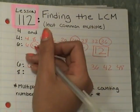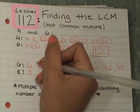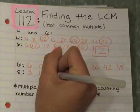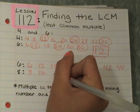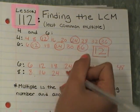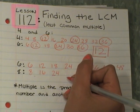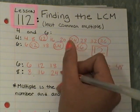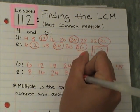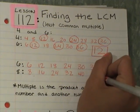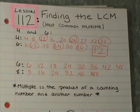8 times 1 is 8, 8 times 2 is 16, 8 times 3 is 24. Sorry — we need 32, we need 40, and then 48. So we do them all in order.